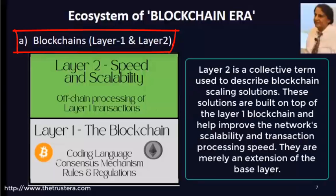Layer two blockchains are derivatives created to solve very specific problems — you can call them sub-chains. Layer two is a collective term used to describe blockchain scaling solutions, providing more scalability to applications running on the blockchain. These solutions sit on top of layer one and help improve network scalability and transaction processing speed. They are essentially extensions or offshoots of the main blockchain, like side chains or mini blockchains running alongside it.